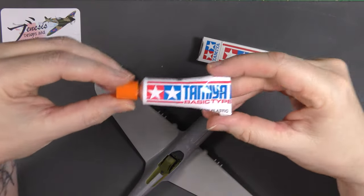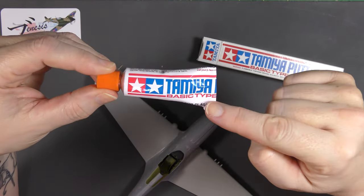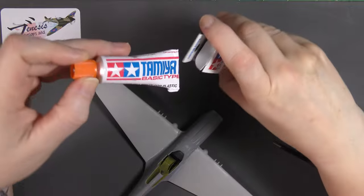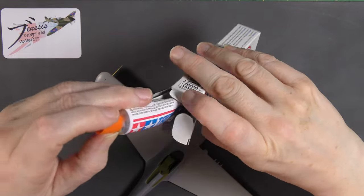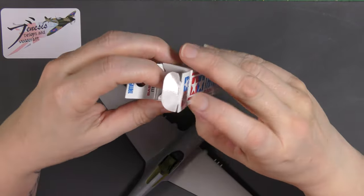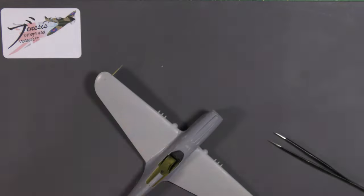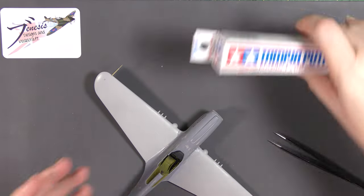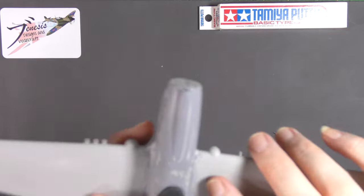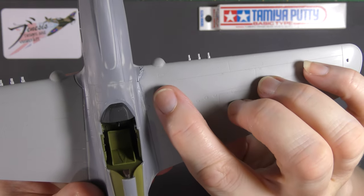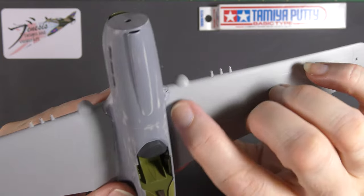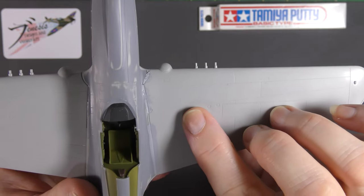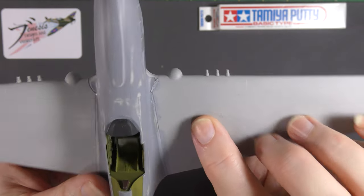I've applied Tamiya basic putty. If I have to use a conventional putty for anything, it's always this. I never use any other sort of putty. This stuff is the best in my experience, but I still use CA and talc most of the time in preference. So the front part of the joint where the gap was slightly bigger, I have applied Tamiya basic putty.